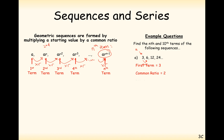The first term is 3, the common ratio is 2, so the nth term is 3 times 2 to the power of n minus 1. Please do not simplify this to 6 to the power of n minus 1 — that is not how multiplication works. It's 3 times by 2 to the power of n minus 1. That's the formula for the nth term of this sequence.